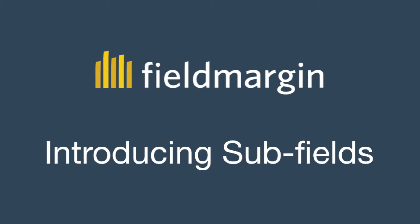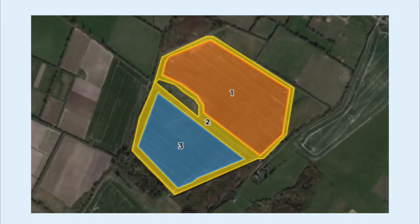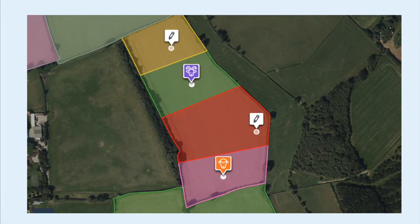So first question: what are subfields? Subfields allow you to divide your fields up into smaller areas to record different crops, grazing blocks, and mark areas that are not in use. Subfields don't change your field boundary and apply for one year only. For each subfield you can set usages, attach notes, photographs, field jobs, and herds.